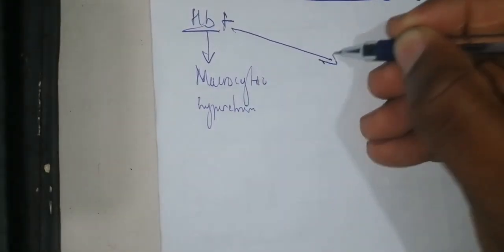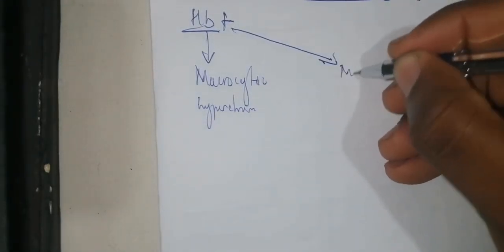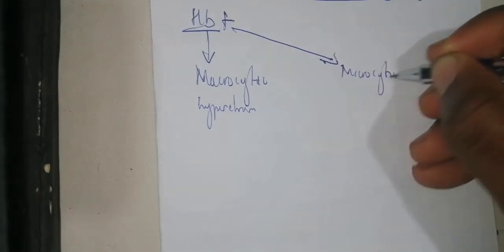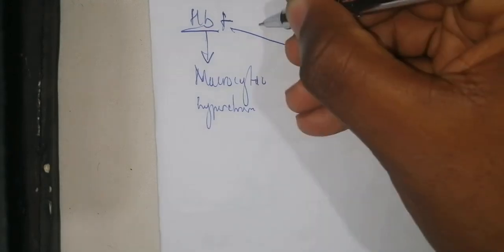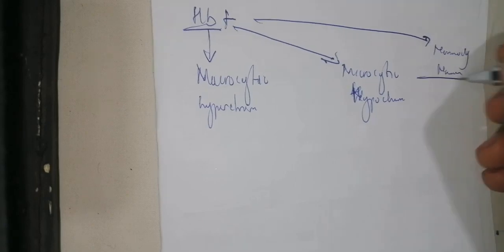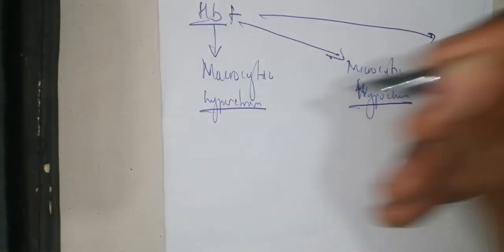The hemoglobin severity classification — mild, moderate, and severe — is important, but what you also need to know is that the etiology of the anemia is visualized by whether it is macrocytic hyperchromic, microcytic hypochromic, or normocytic normochromic. There are different etiologies for these different types of anemia.